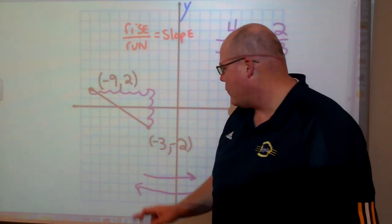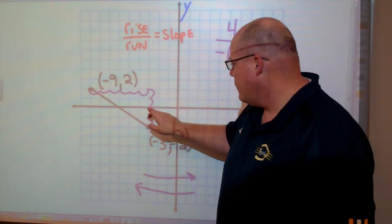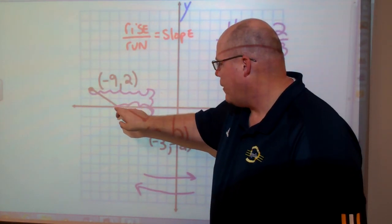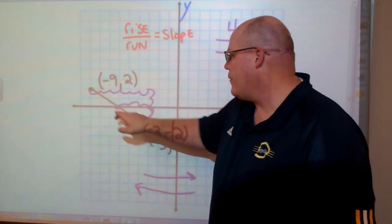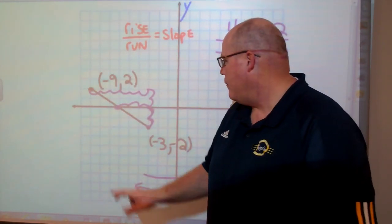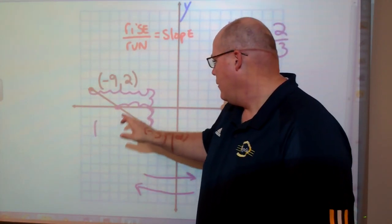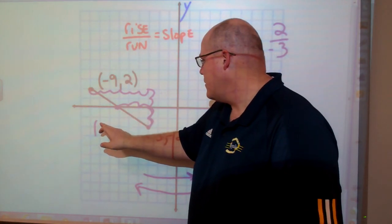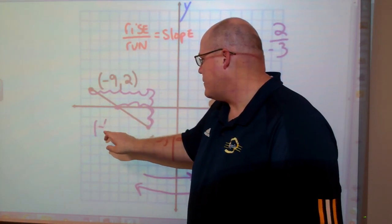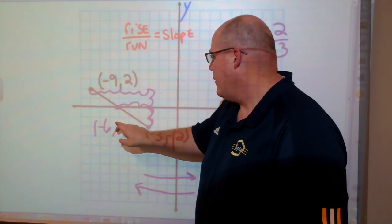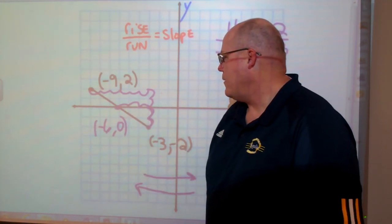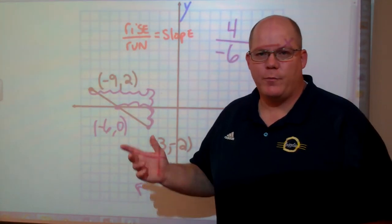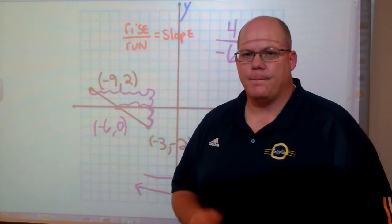So let's see if that would work — rise 1, 2, run negative 3: 1, 2, 3 to the left. And there you go, that line runs right through that point. At negative 6, y would be a zero value here. So that's how you use rise over run to find the slope of a line. Best of luck.